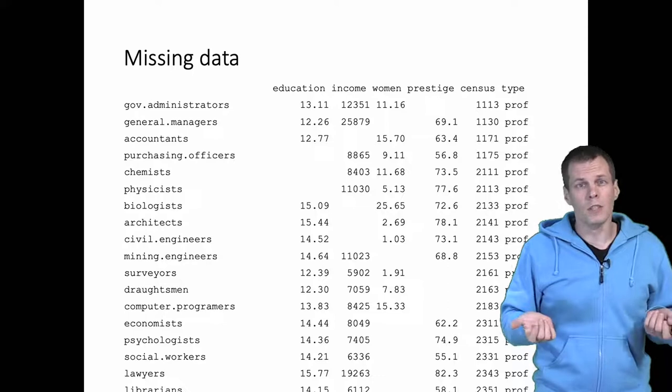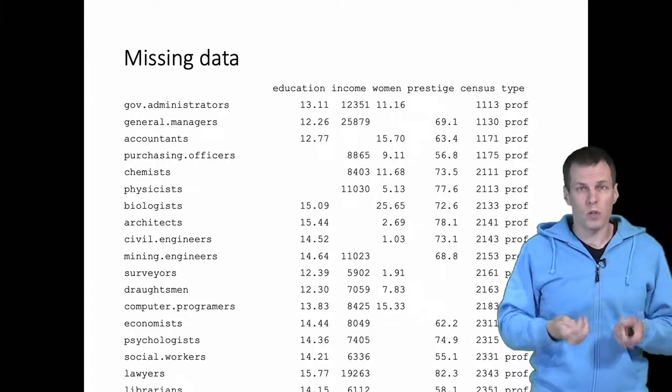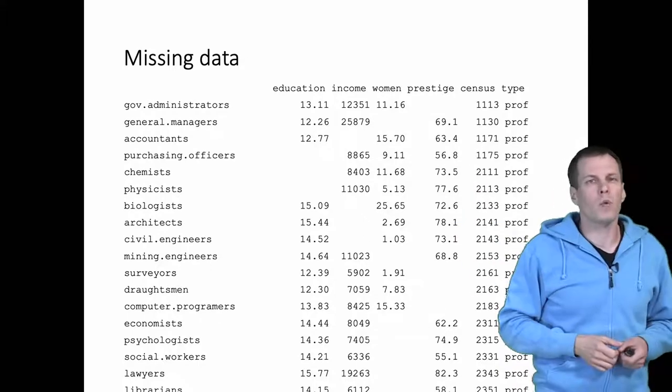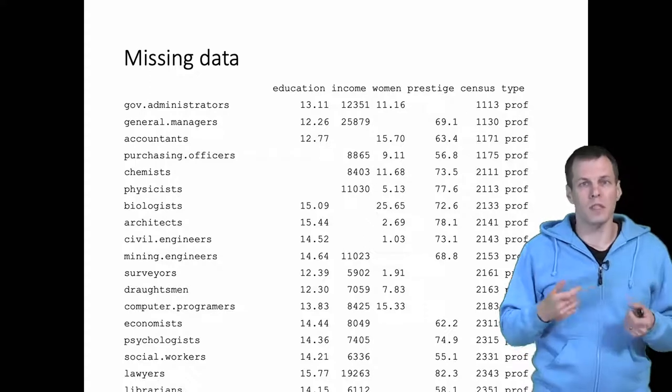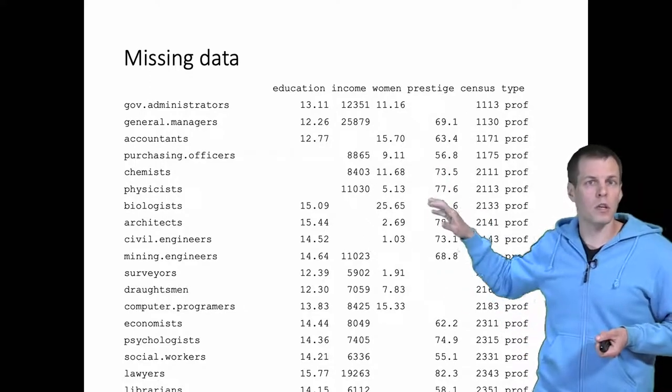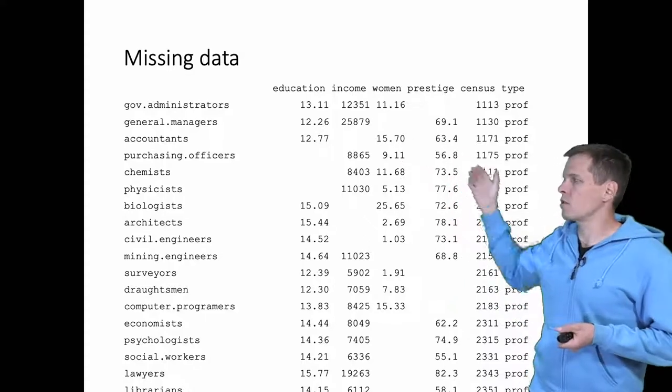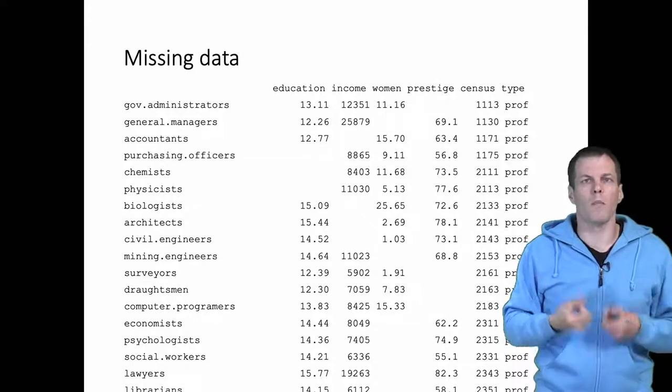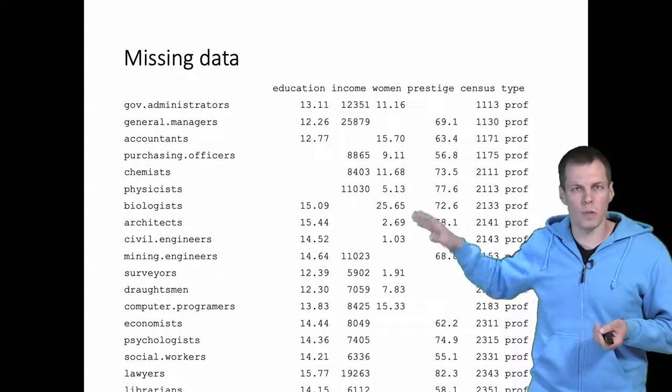Are these data useless for estimating the effects of education, share of women, and prestige on income? The answer is no. There is lots of information. We still have 75 percent of the available information because we have four variables and only one fourth of the values are missing. It just happens that the missingness is spread out through all the observations. We can estimate the effects, but to do so we need to apply modern missing data techniques. Simply eliminating observations will not cut it.